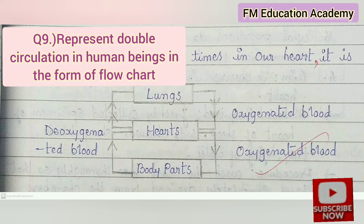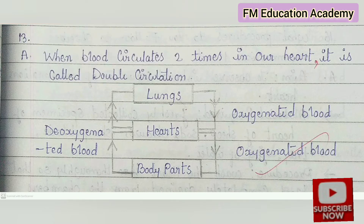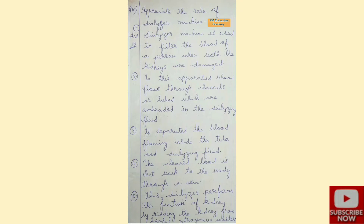Question 9: represent double circulation in human beings in the form of a flow chart. From the body parts, deoxygenated blood is given to the heart. The heart sends that blood to the lungs, which purify it. Oxygenated blood is returned to the heart, and then given to the body parts for energy. When blood circulates two times through the heart, it is called double circulation.